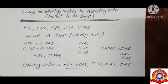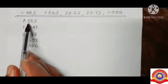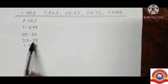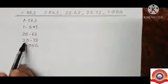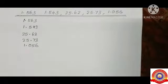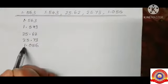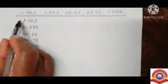Next we shall do one more example. The numbers are 1.563, 1.543, 25.62, 25.73, and 1.056. The whole parts of the given numbers are 1, 1, 25, 25, and 1. From this we have to find the smallest number among 1.563 and 1.543.